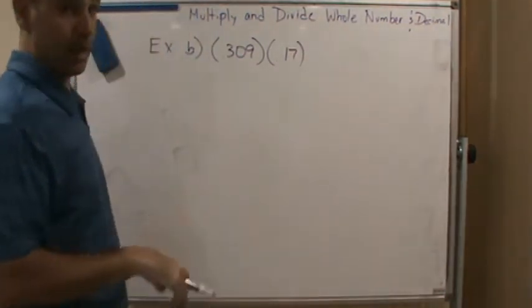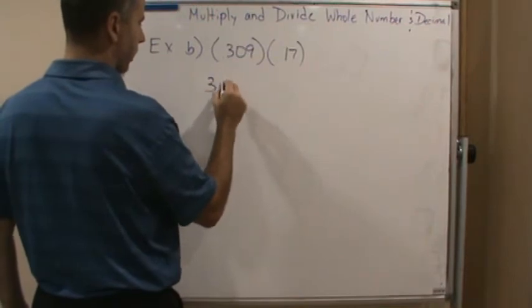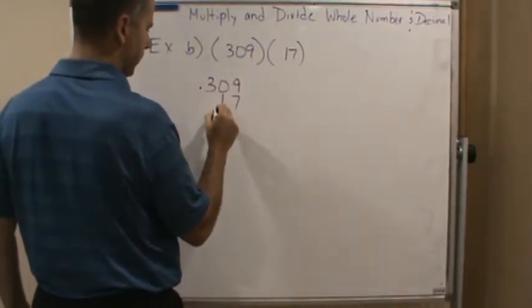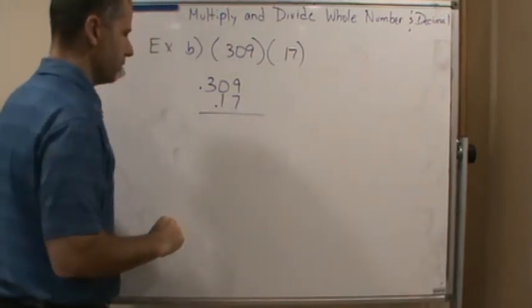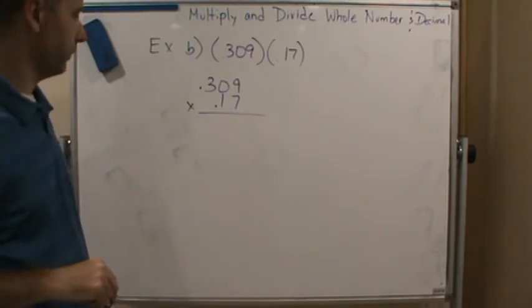So again, I'm going to set it up as if they were whole numbers. So I'm going to do 309, 17. So these two. And so again, I'm going to multiply them, ignoring the decimals.